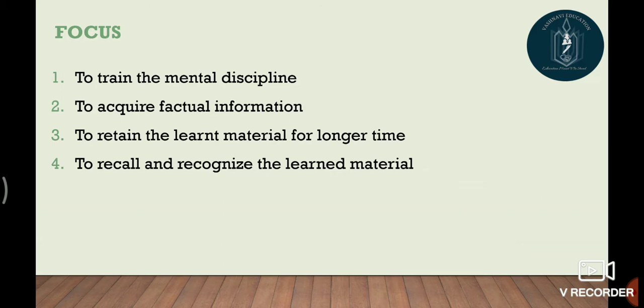Number two is to acquire factual information — to memorize things exactly as they are. For example: the sun rises in the east, the sun sets in the west. Here we are not telling the student why it happens, what celestial bodies are, or what the sun is. We are simply telling them that this shining bright yellow thing is the sun, and where you live, the sun rises in the east and sets in the west. Main focus is to acquire factual information.